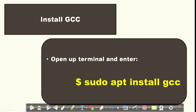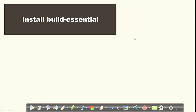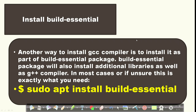To install GCC, open your Ubuntu operating system and open the terminal. Within the terminal, type the command: sudo apt install gcc, then press Enter. It requires some time to install. Another way to install GCC is using build-essential, which will also install additional libraries as well as the G++ compiler used for C++ programming.